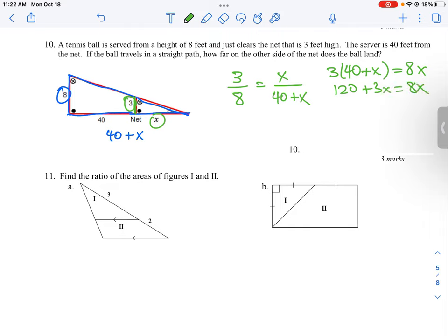Subtract, gather all the x's on one side, so it's going to be 120 is equal to 5x, and then divide both sides by 5, so x in this case is equal to 24.